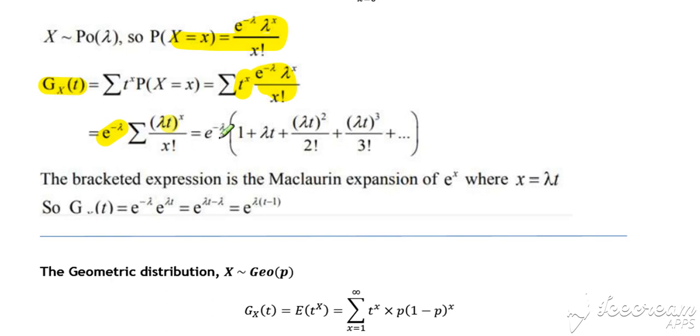When we start to sum that term by term for a Poisson, starting with x equals 0 going up in integer steps, we end up with e to the minus lambda as the factor outside. The summation is the Maclaurin expansion of e to the x, where x equals lambda t. So we substitute that result in and simplify to get our standard result.